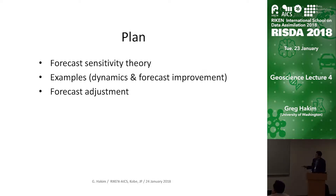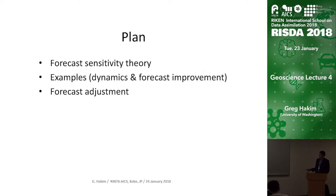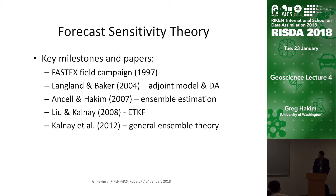The plan here is to go through the theory first and then look at some examples for dynamics and forecast improvement. And then the very last thing I'll talk about is something we call ensemble forecast adjustment, which is a way to improve forecasts on the fly as new observations come in.